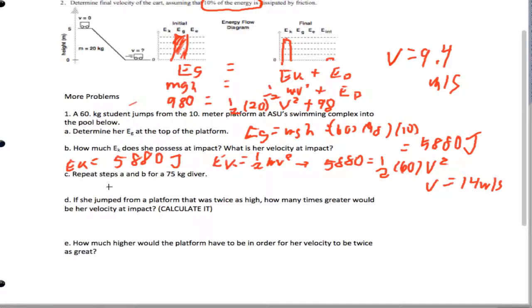If we repeat steps A and B for the 75 kilogram diver, I'm just going to tell you right now you're going to end up getting 14 meters per second. If you jump from a platform twice as high, it actually turns out that her velocity at impact is 19.8. And you end up getting that it's about 1.4 times. If you were really careful to do math, it's square root of 2, but I'm not going to worry about that on the final.